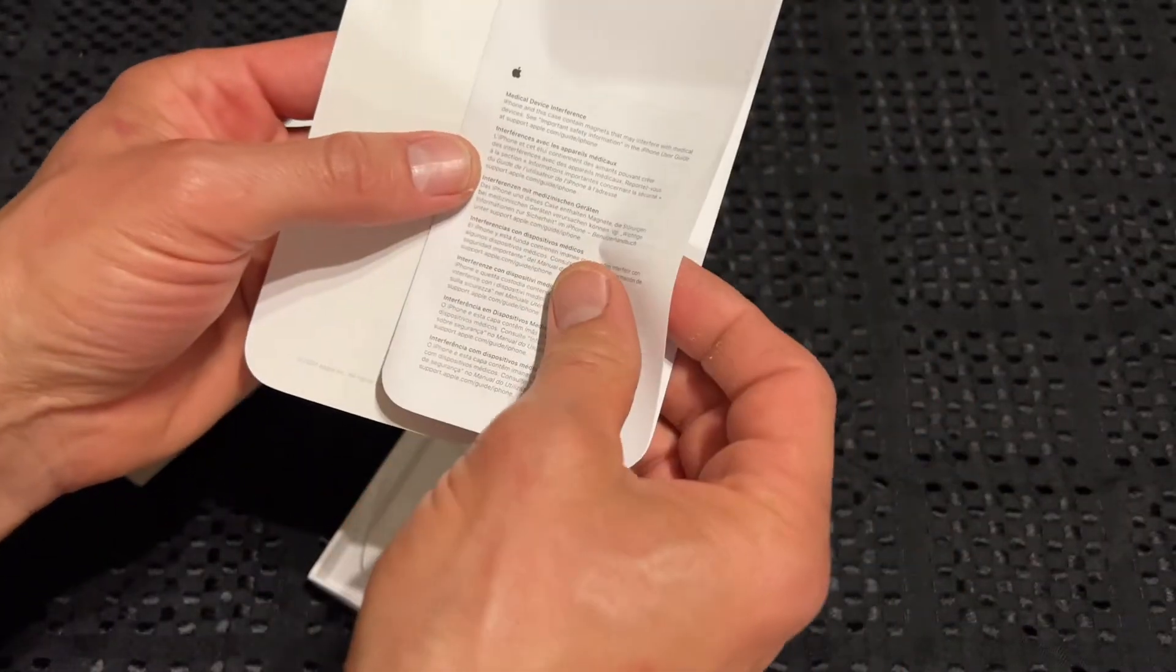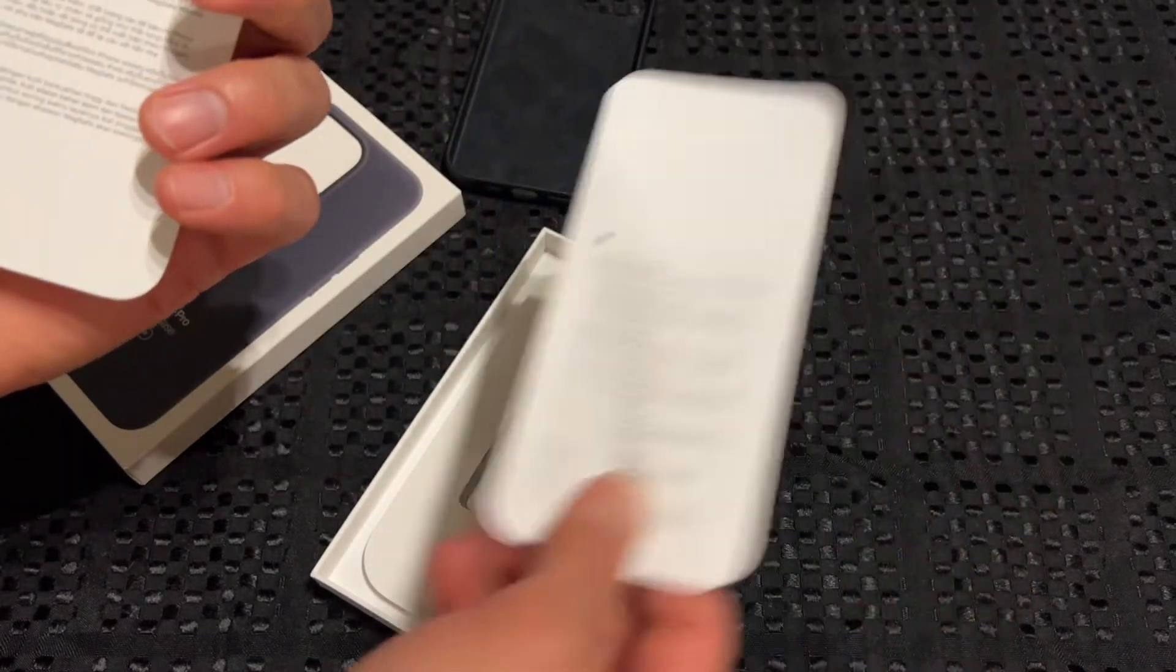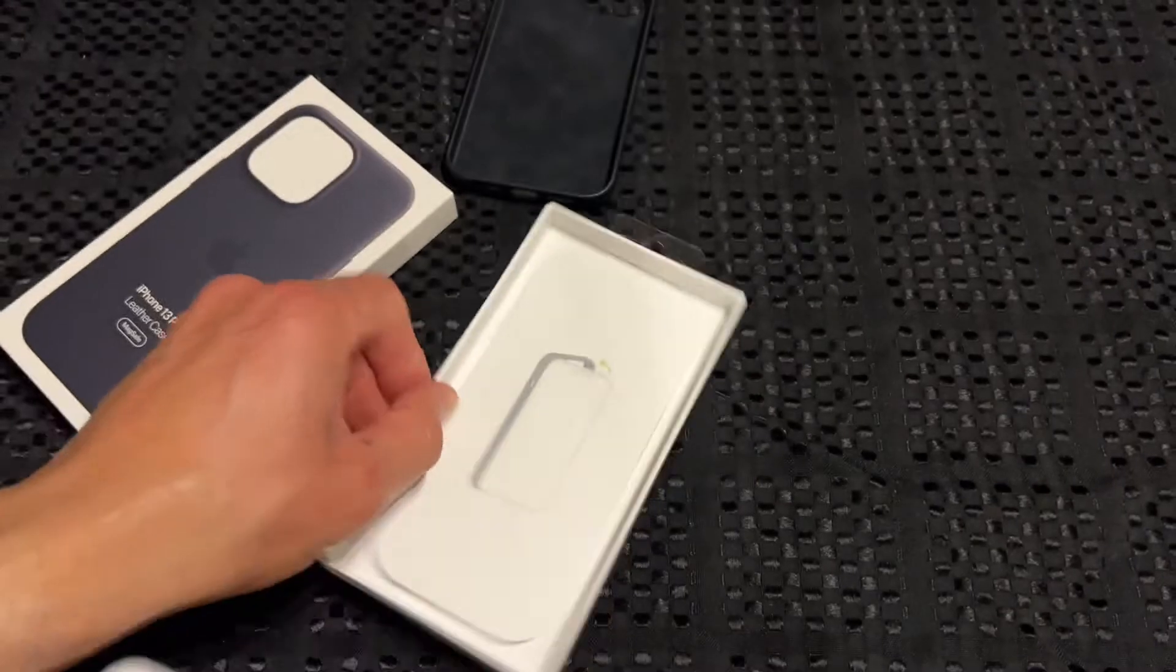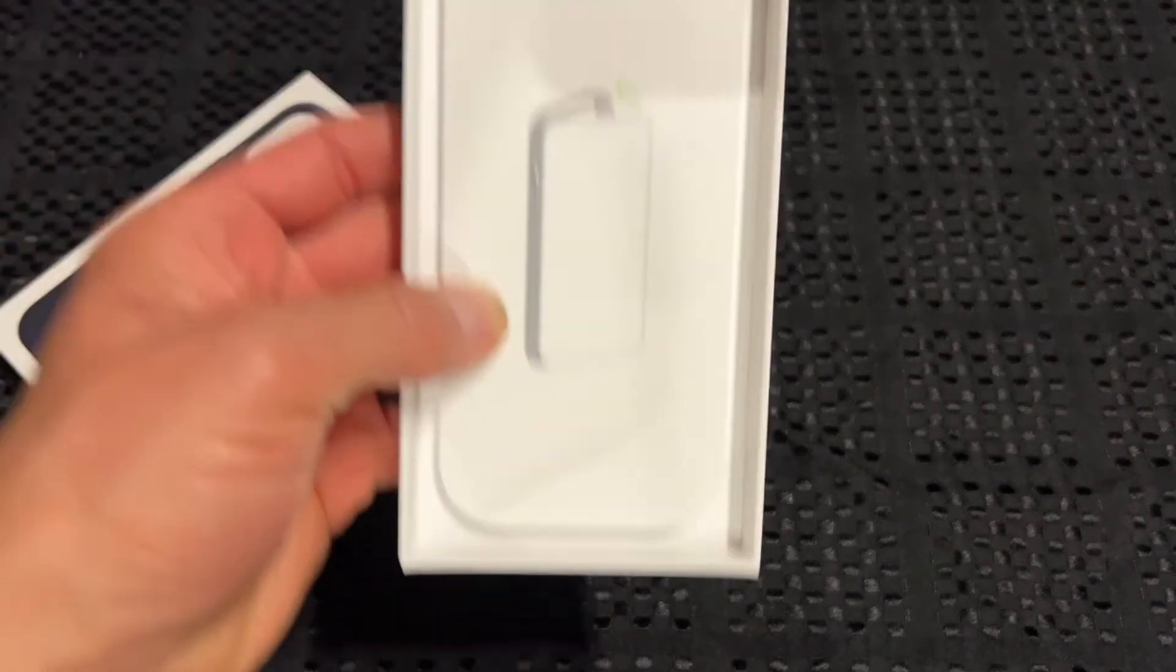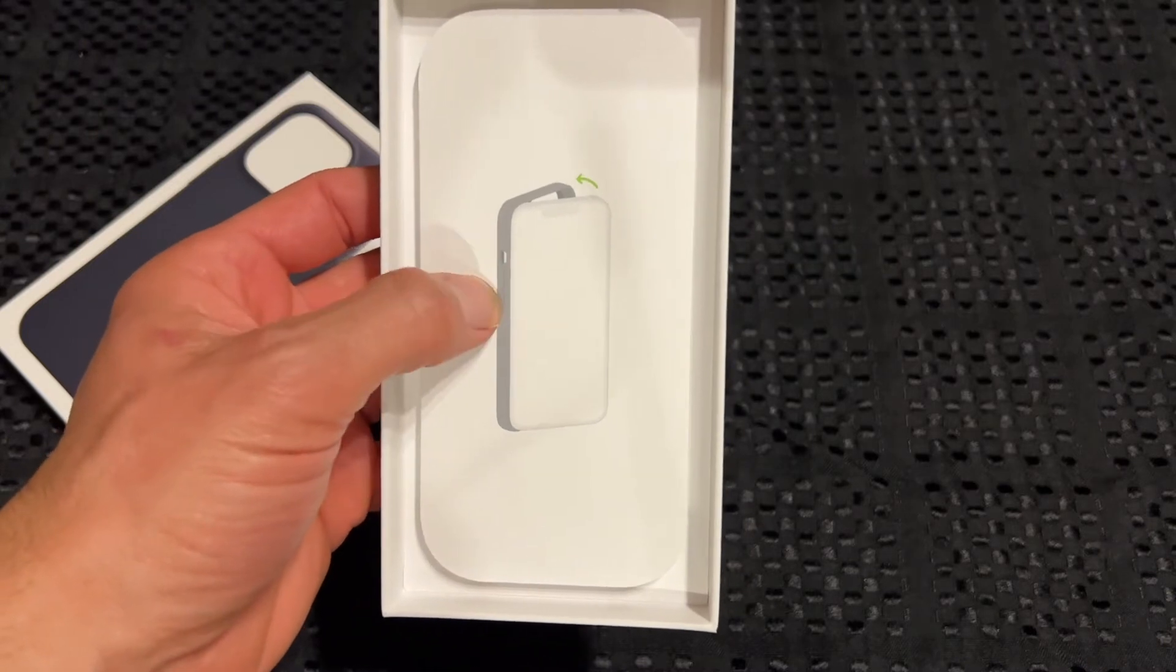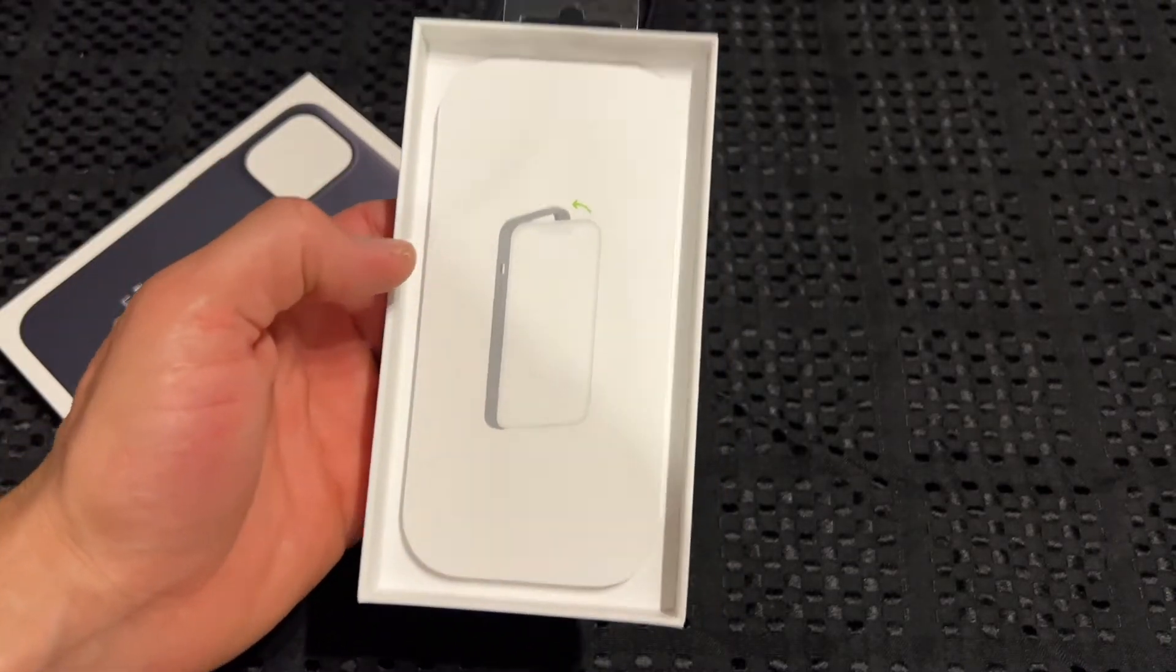You get the interference paperwork for the MagSafe and just your little blurb there. It shows you how to put it in your phone just there. You just slide it in from that way and push it in on the right hand side.